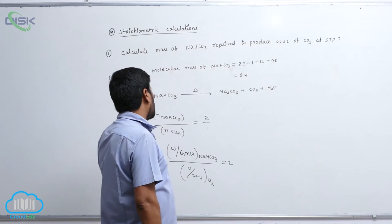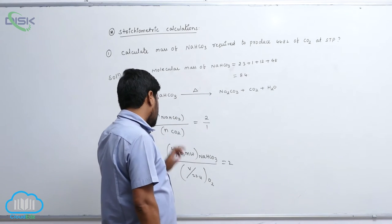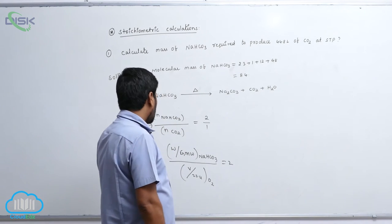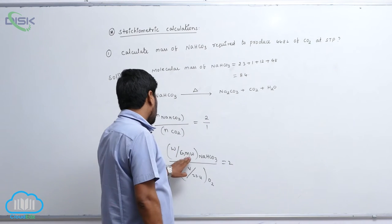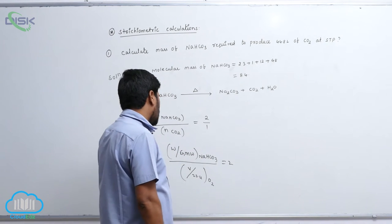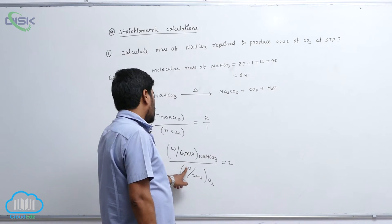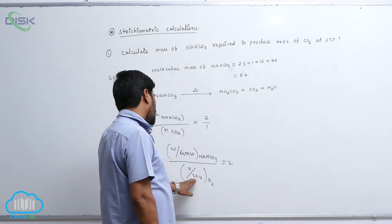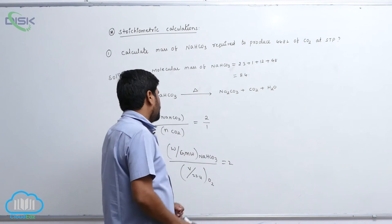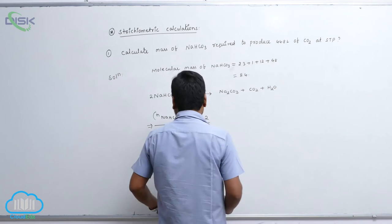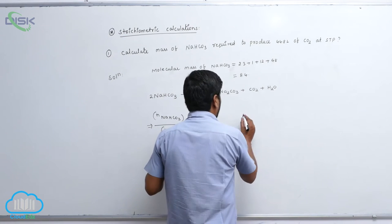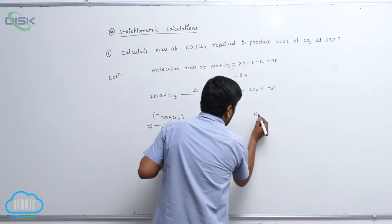So number of moles of sodium bicarbonate equals to number of moles of CO2. Therefore, weight by gram molecular weight of sodium bicarbonate by volume, volume of CO2 by volume at STP, so this equals to 2.